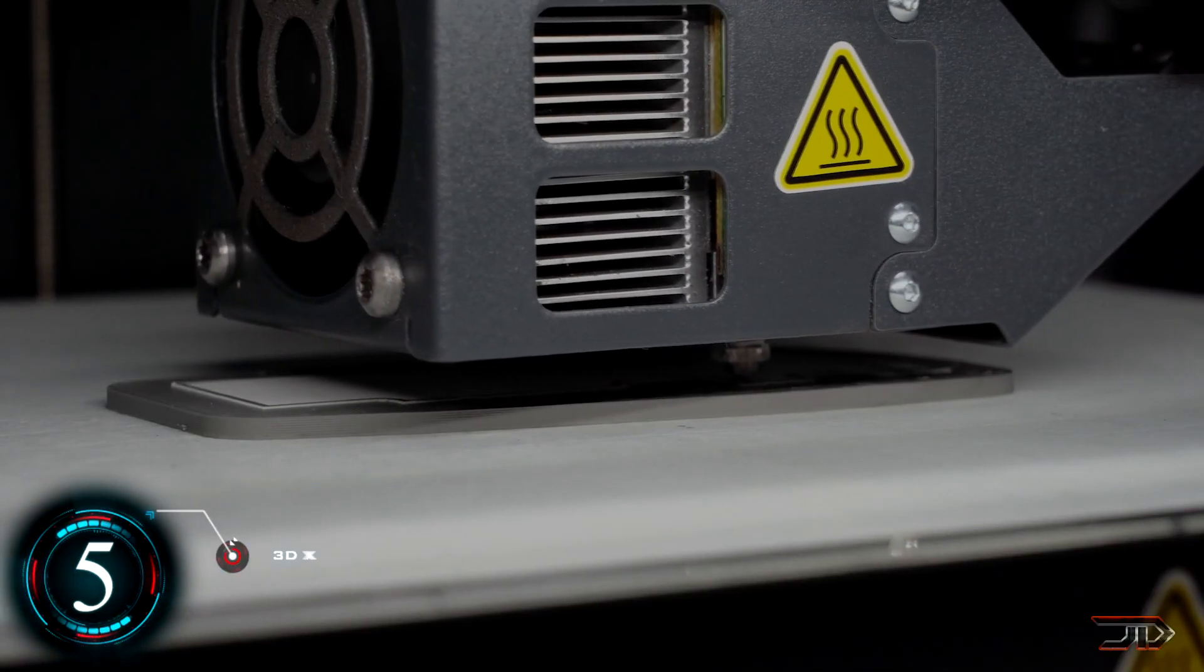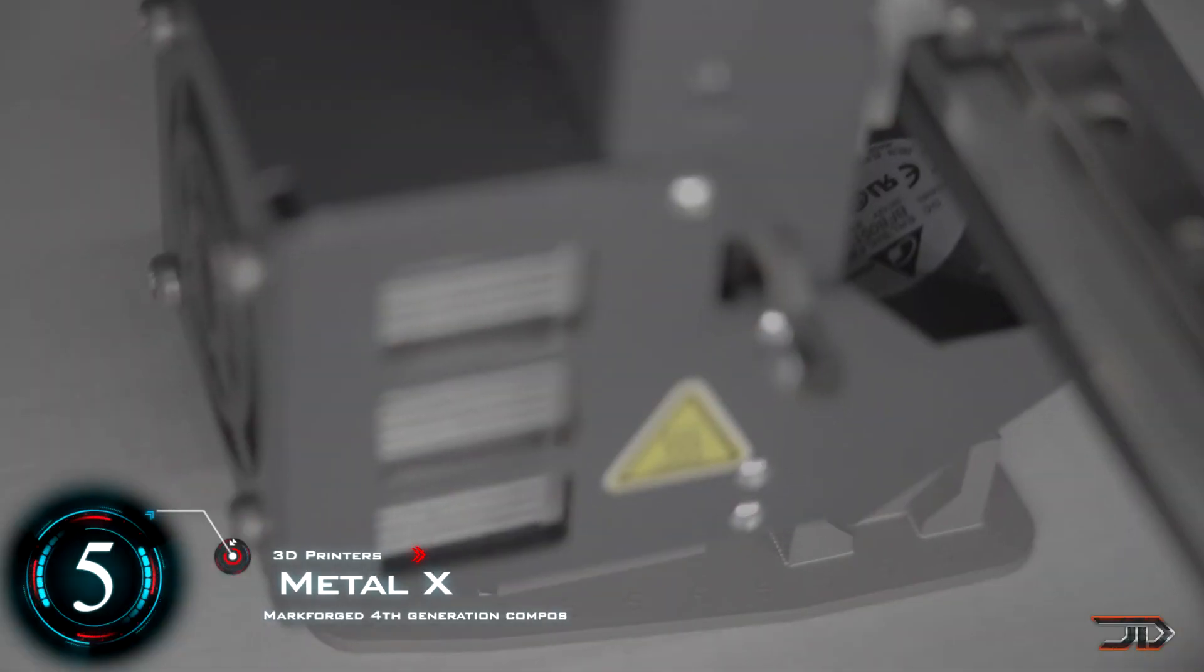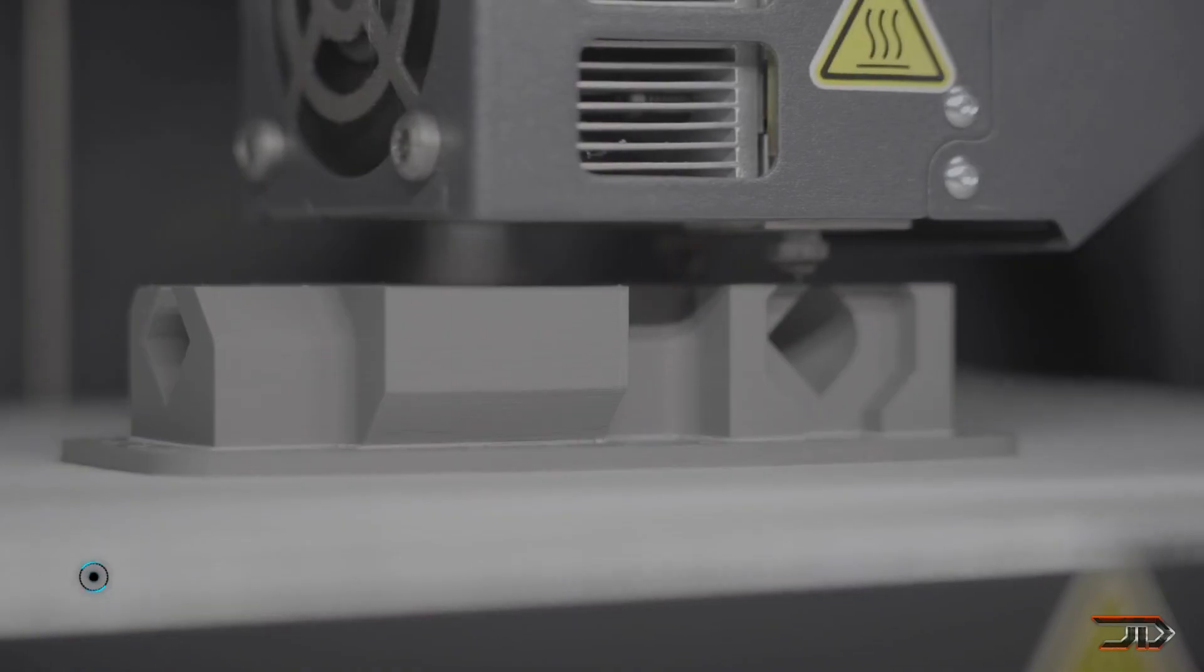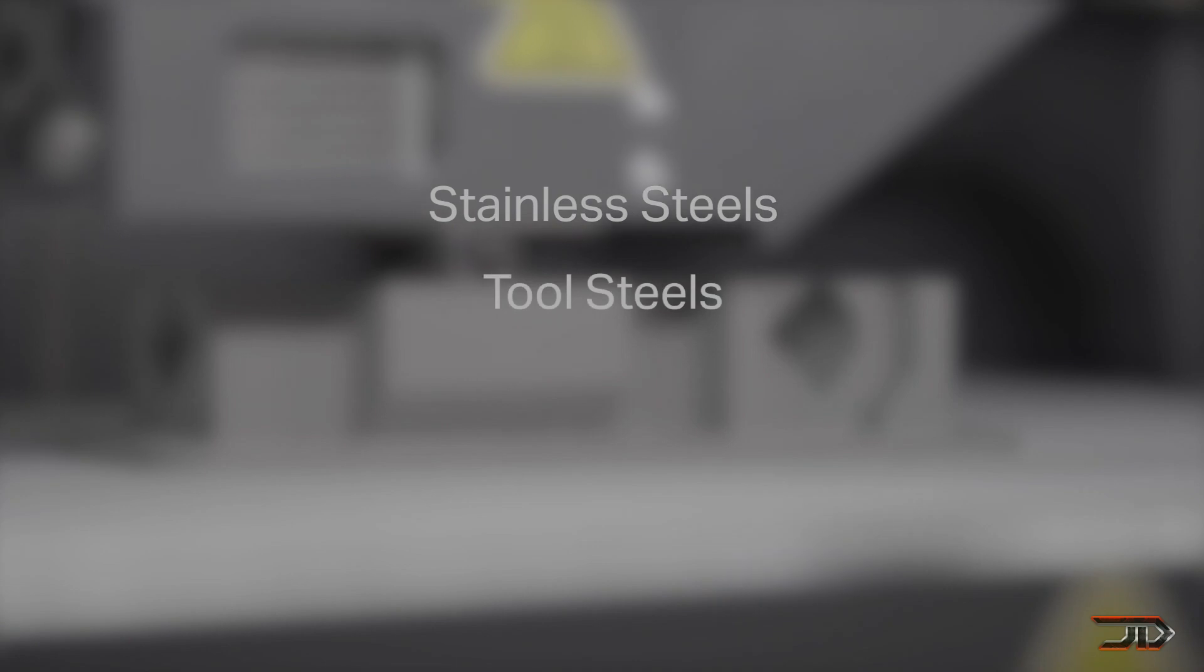That's number 5, the Metal X. Utilizing atomic diffusion additive manufacturing, the Metal X is one of the smaller printers in its category. Similar to FDM, the Metal X deposits layers of metal powder into a plastic matrix. The printed parts are then washed and sintered in the accompanying machines.